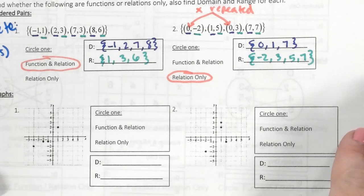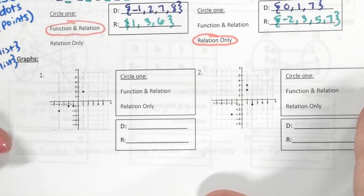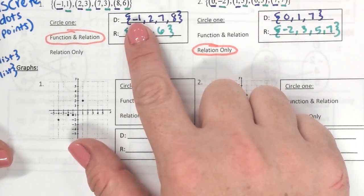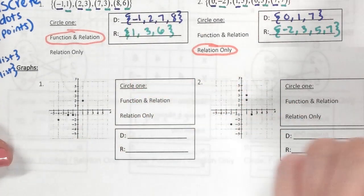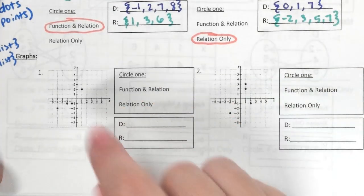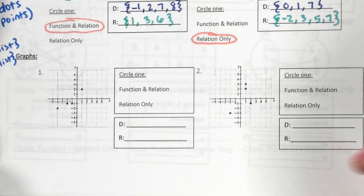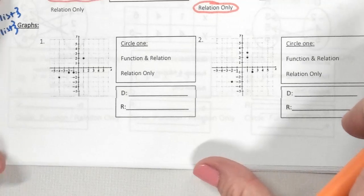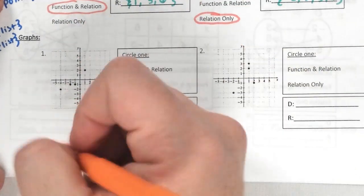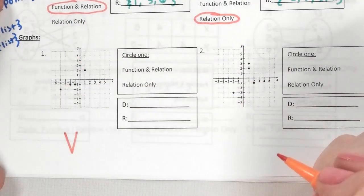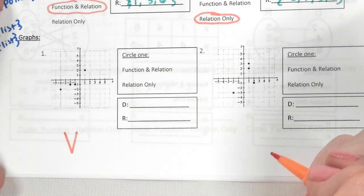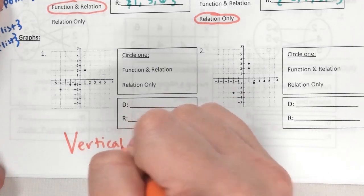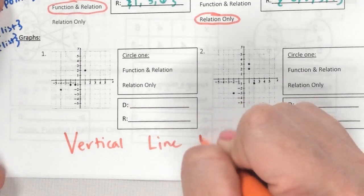Now let's look at the graphs. It's the same concept — it just doesn't give us the ordered pairs, we have to find the numbers. Do y'all remember how to tell from a graph if it's a function? It's a test — starts with a V — the vertical line test.